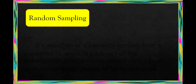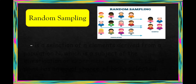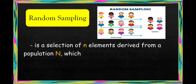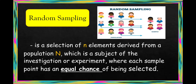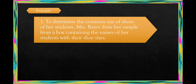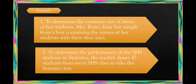This process is called random sampling. Random sampling is a selection of N elements derived from a population N, which is a subset of the investigation or experiment, where each sample point has an equal chance of being selected. For example, to determine the common shoe size of her students, Mrs. Reyes draws her sample from a box containing the names of her students with their shoe sizes. Another example: to determine the performance of senior high school students in statistics, the teachers draw 10 students from every senior high school class to take the statistics test.